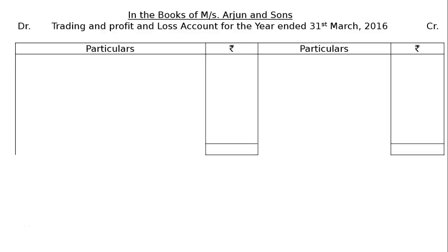From the trial balance of Measures Arjun and Sons as on 31st March 2016, prepare a trading and profit and loss account and balance sheet. In this question we have two adjustments: third point bad debt and provision, fourth point rent is paid for 11 months, fifth adjustment loan from bank was taken on 1st October 2015, and provide manager's commission at 10 percent on net profit after charging such commission. We will start with the books of Measures Arjun and Sons trading and profit and loss account for the year ended 31st March 2016.